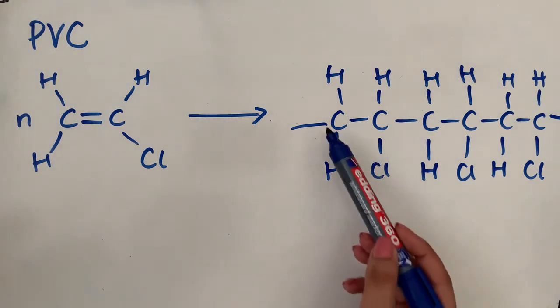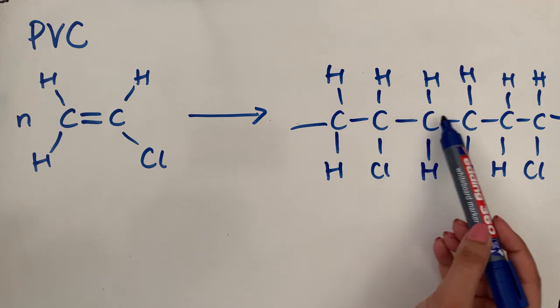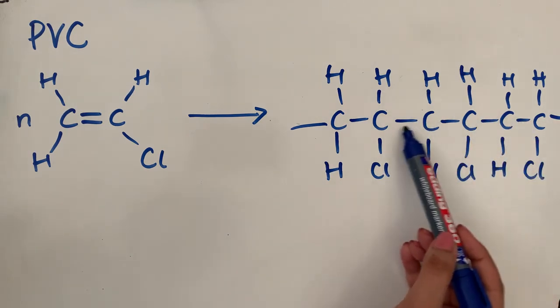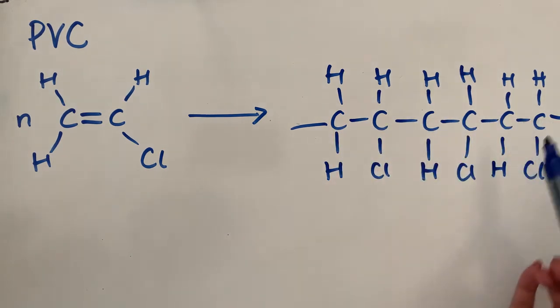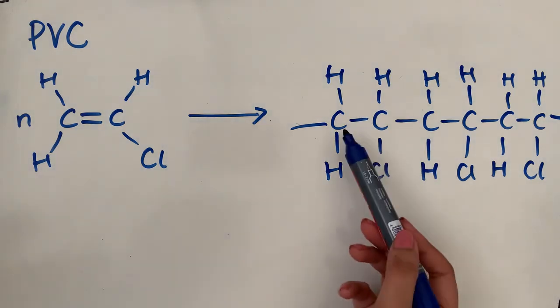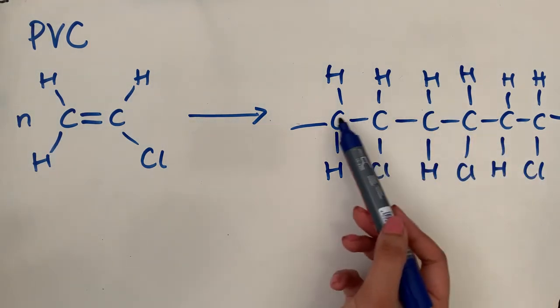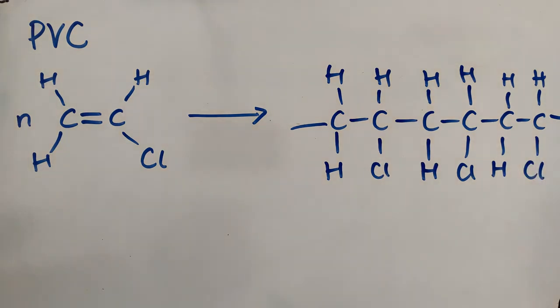As you can see, with an addition polymer, you have this carbon chain, this carbon spine going through the molecule. And that's the characteristic of an addition polymer. It's really important when it comes to comparing it with a condensation polymer. An addition polymer will have that carbon spine, that carbon backbone, as we have over here.